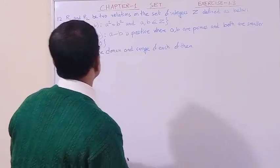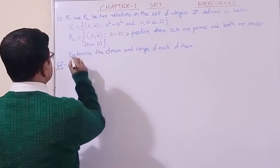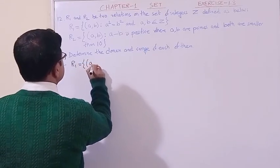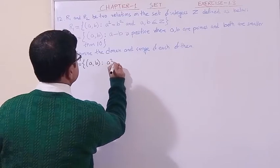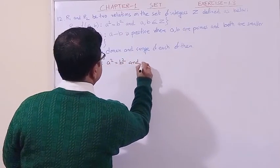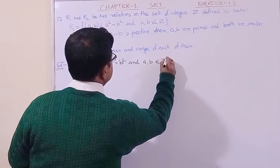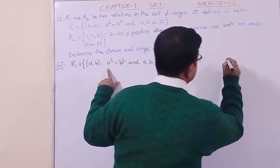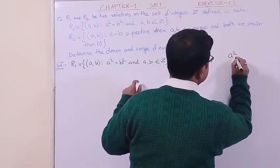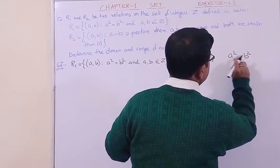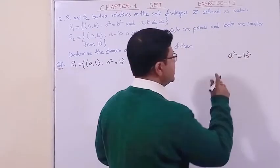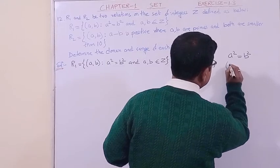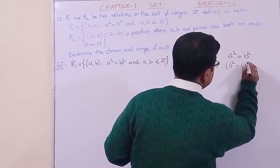The question asks us to determine the domain and range of each relation. Let us write R1 first in set-builder notation: R1 = {(a, b) : a² = b², a, b ∈ Z}. Now here we shall concentrate on the condition. a and b are integers and the condition is a² = b².